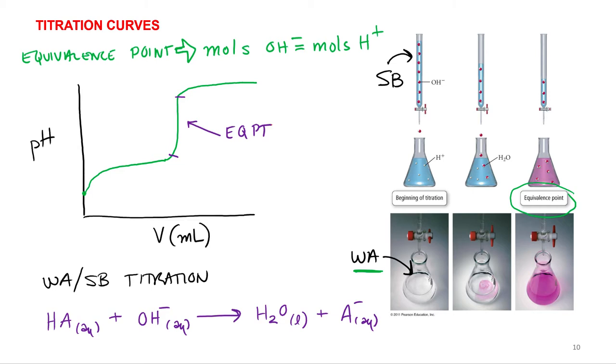At halfway to the equivalence point, something really nice happens. So if we start out with one mole of HA, and halfway to the equivalence point we've only neutralized half of it, so we've got 0.5 moles left. That's going to make 0.5 moles of A minus. So halfway to the equivalence point, the concentration of HA equals concentration of A minus.